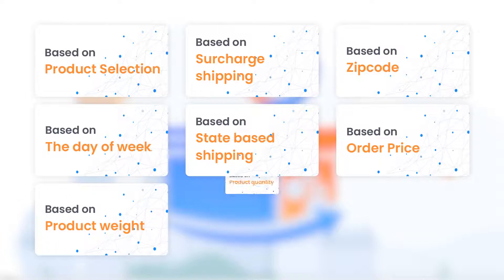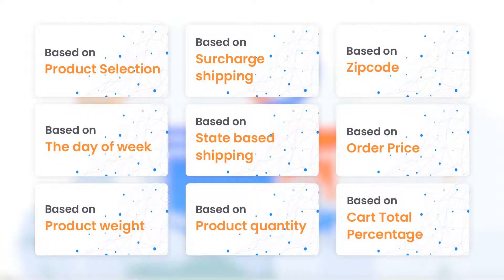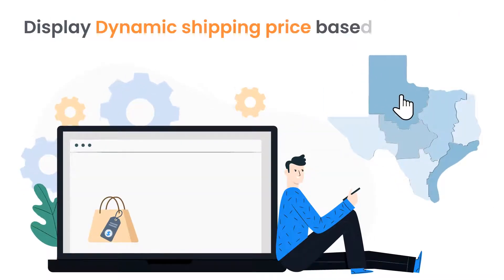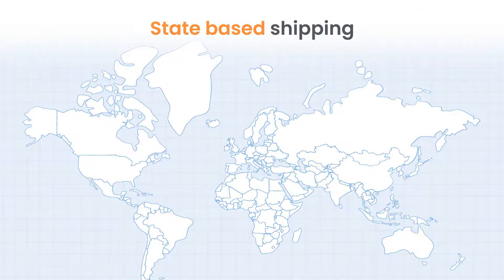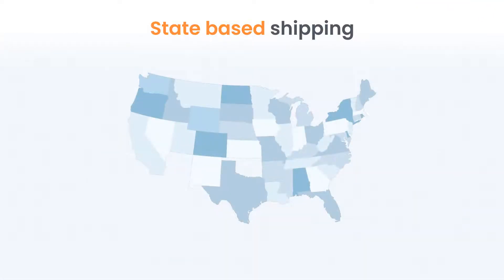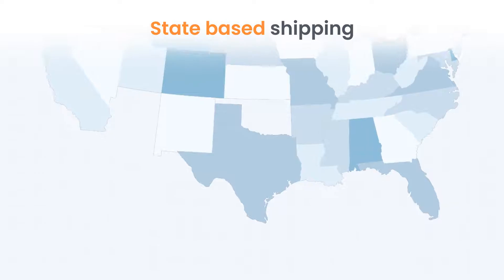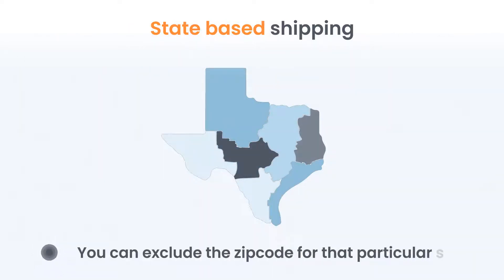We also support product weight, product quantity, cart total percentage, and many more. Display dynamic shipping price based on zip code and state-based shipping, with the ability to exclude zip codes for a particular state.